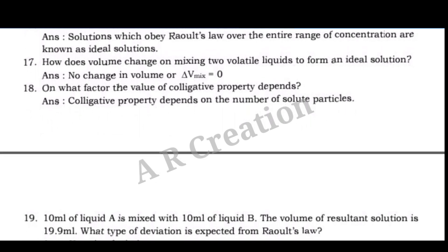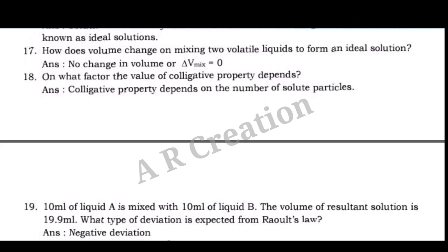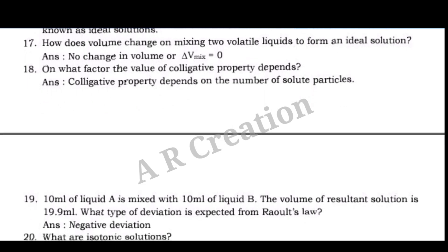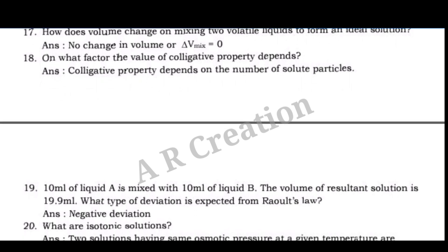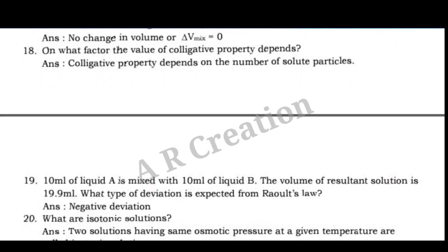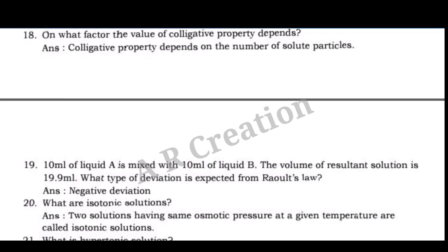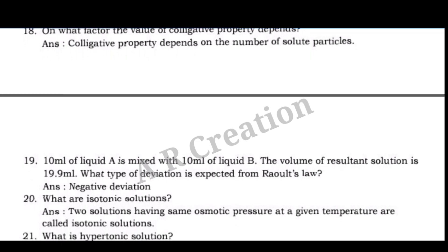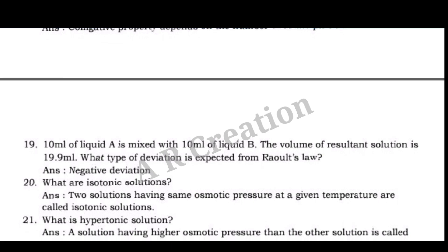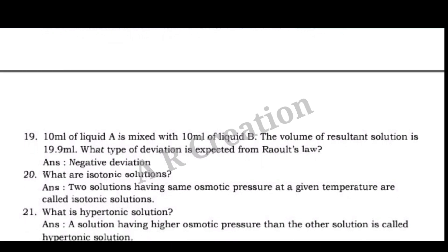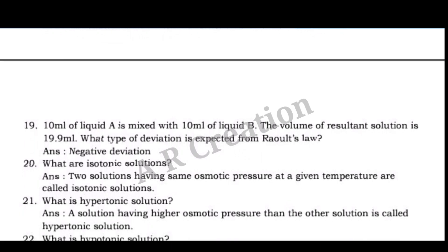Question 19: 10 mL of liquid A is mixed with 10 mL of liquid B. The volume of the resultant solution is 19.9 mL. What type of deviation is expected from Raoult's law? Answer: Negative deviation. Question 20: What are isotonic solutions? Answer: Two solutions having the same osmotic pressure at a given temperature are called isotonic solutions.